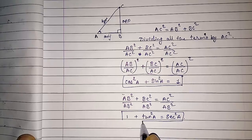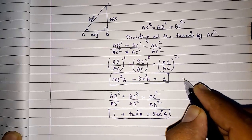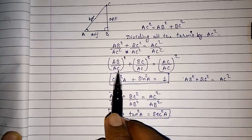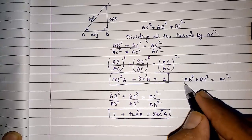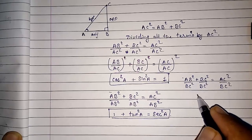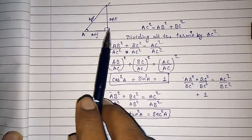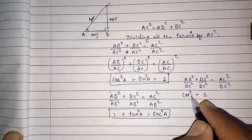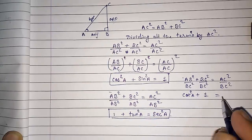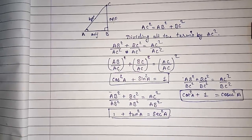Similarly, we can prove the third one also. Again writing AB² plus BC² is equal to AC². I had one time divided by AC², one time by AB²; now the remaining is BC. So now I am dividing all by BC². BC/BC cancels to give one, so (AB/BC)² + 1 = (AC/BC)². AB/BC is adjacent by opposite giving cot²A, and AC/BC is hypotenuse by opposite giving cosec²A. So cot²A + 1 = cosec²A. This way we can derive the three main identities.